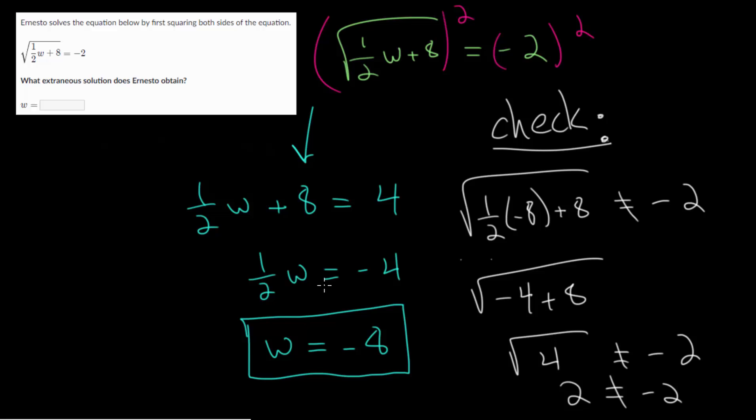Now, like I mentioned, what we did find, this negative 8, this solves the equation when we have a negative sign in front of the square root here. Since notice, if you plug in that negative, now everything makes sense. Minus 2 would be equal to minus 2. So for this problem, what extraneous solution does Ernesto obtain? Well, w would be negative 8 is extraneous here. And let's keep going.